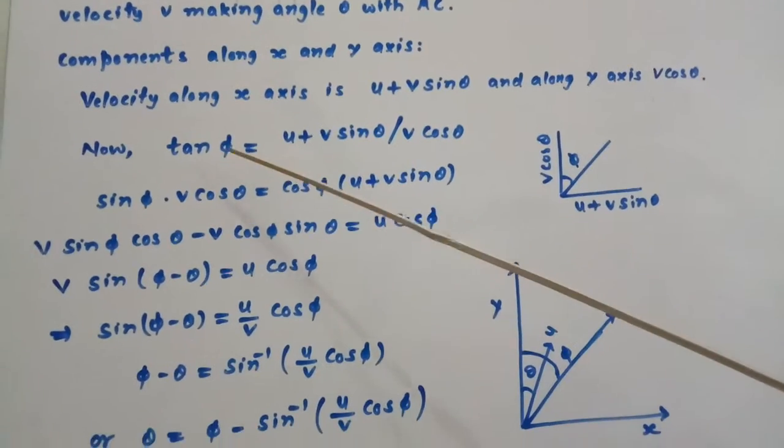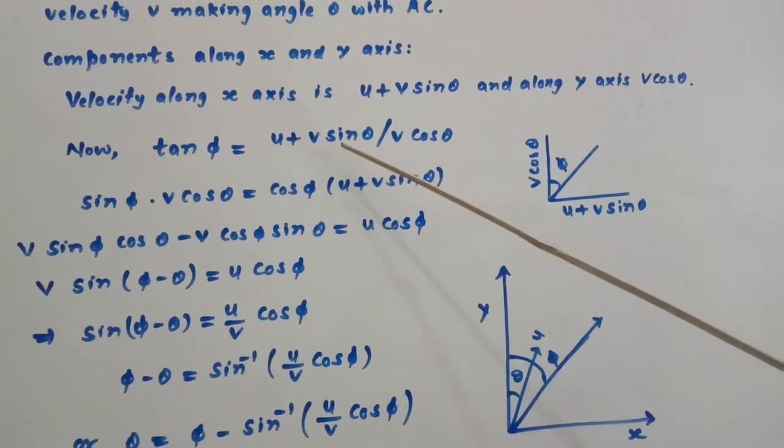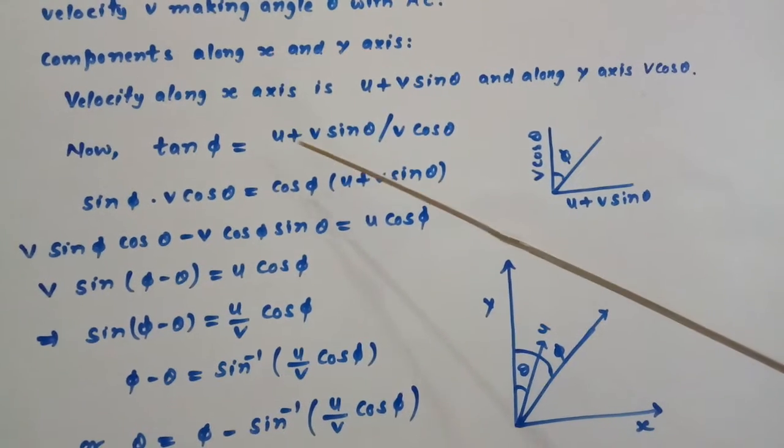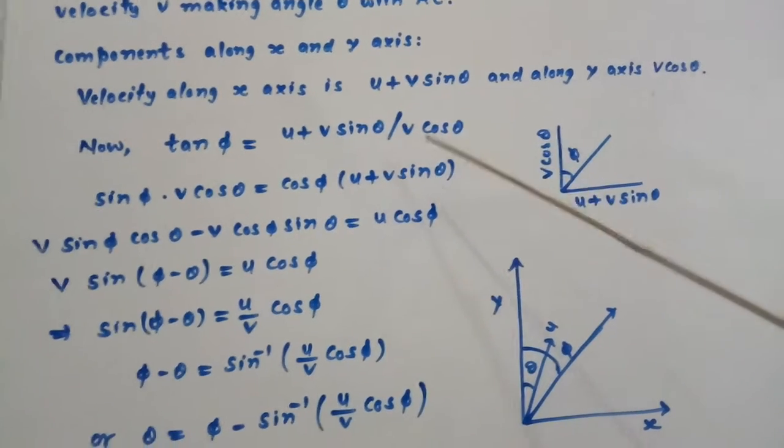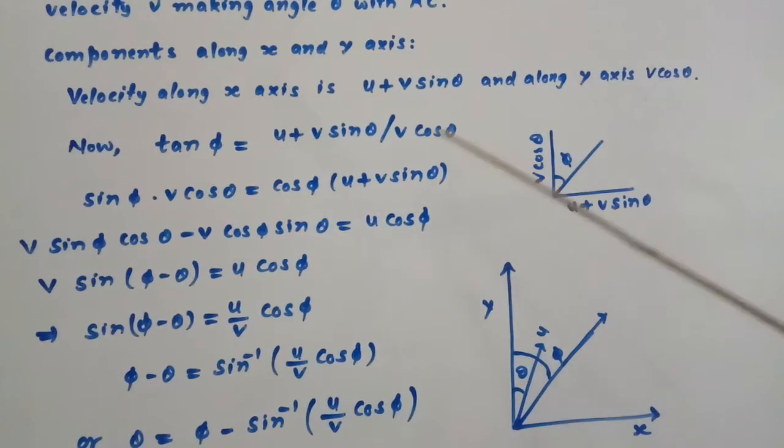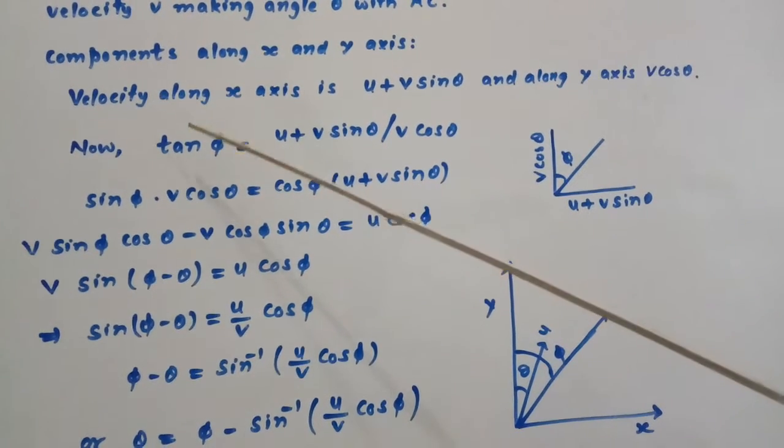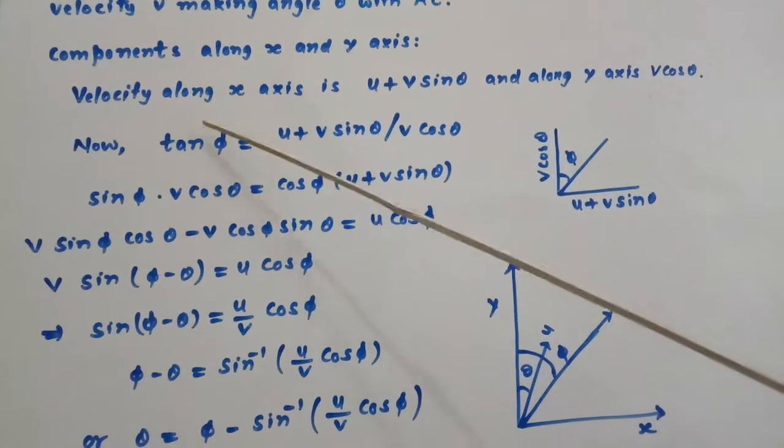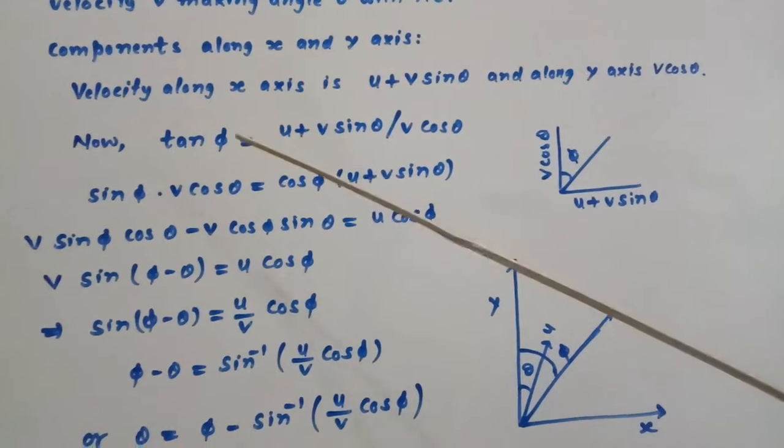Now, tan phi equals perpendicular upon base, so U plus V sin theta divided by V cos theta. Or we write tan phi as sin phi divided by cos phi, and we make cross multiplication.